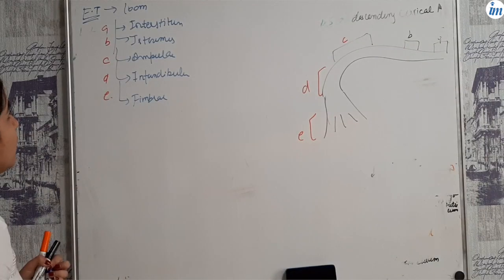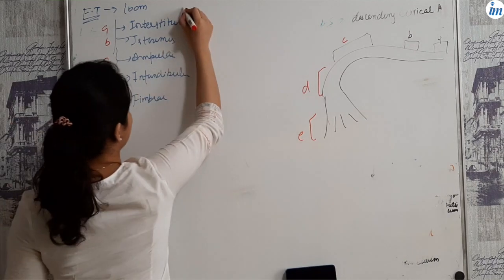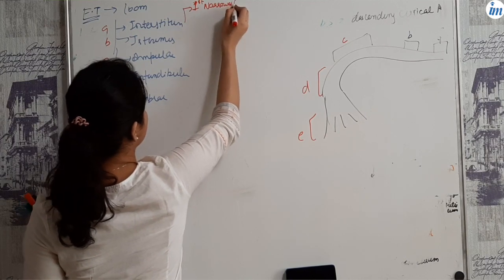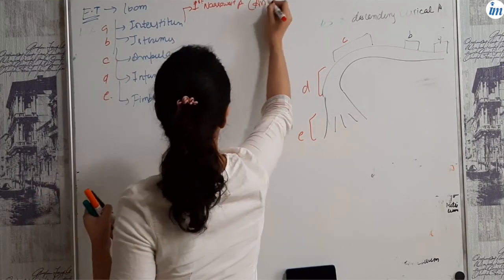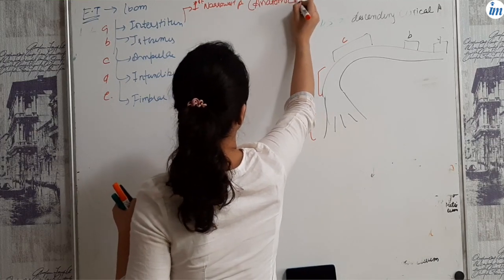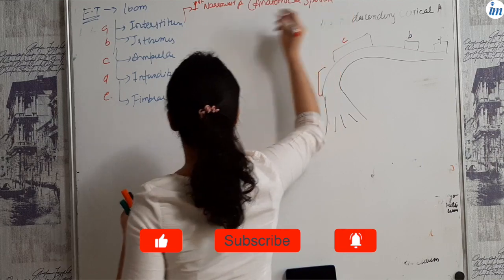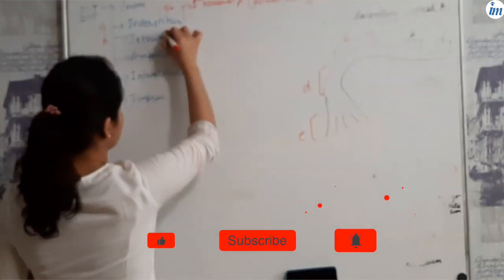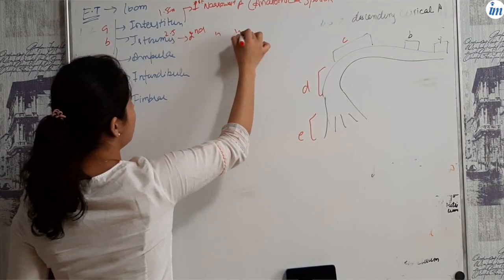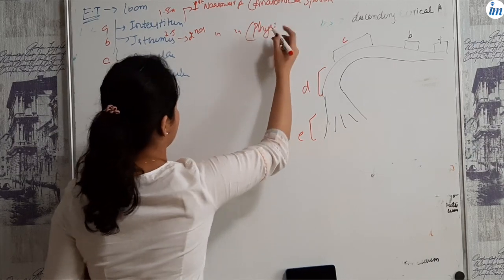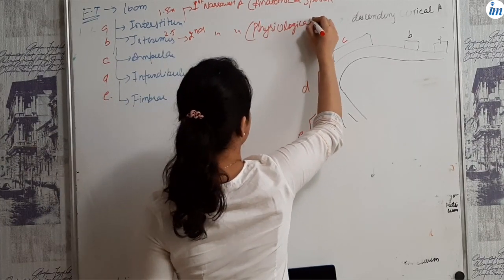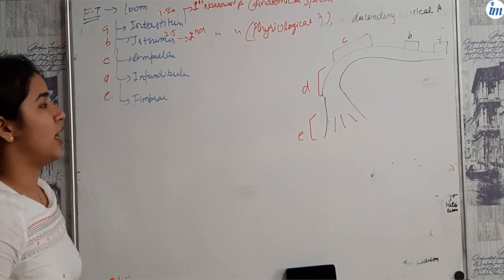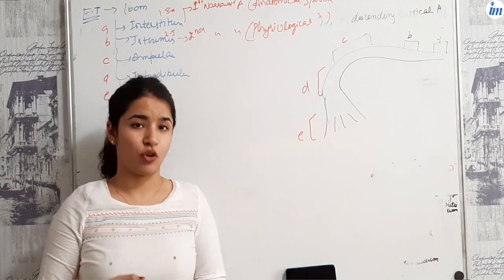The interstitium is the narrowest part and is also known as anatomical sphincter. It is only 1.5 cm. Isthmus is 2.5 cm, the second narrowest part, and is known as physiological sphincter. Interstitium is the last to rupture in case of ectopic pregnancy, whereas isthmus is first to rupture in ectopic pregnancy.